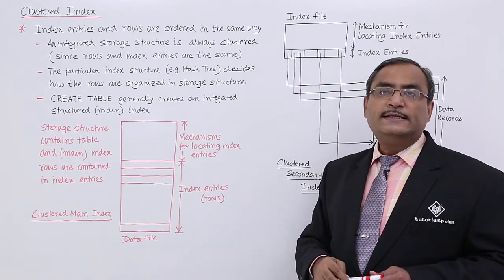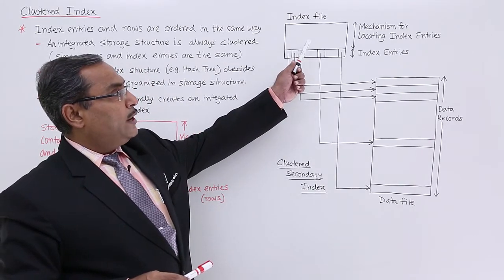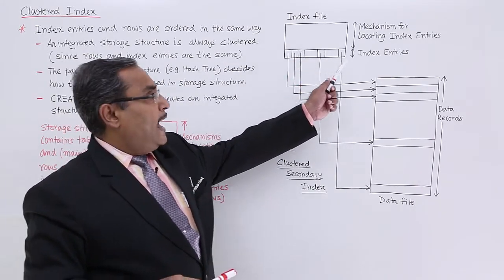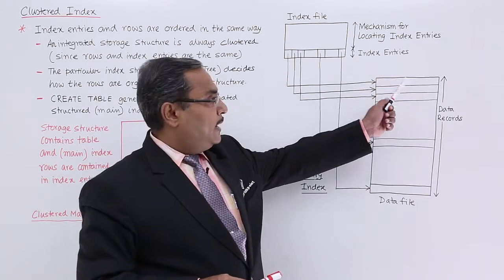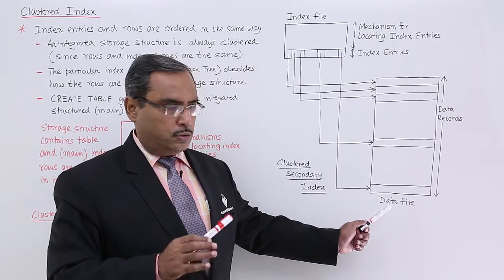Now, what is the secondary index? This is the mechanism for locating index entries, these are the index entries, and this is a data file containing all the rows or records.